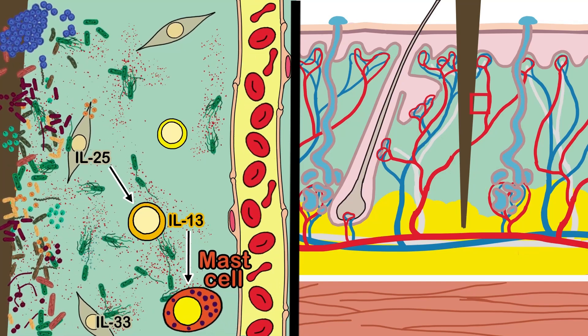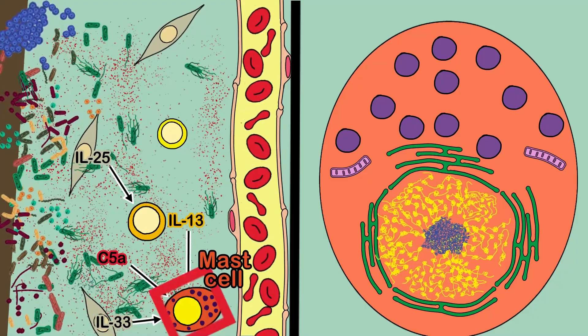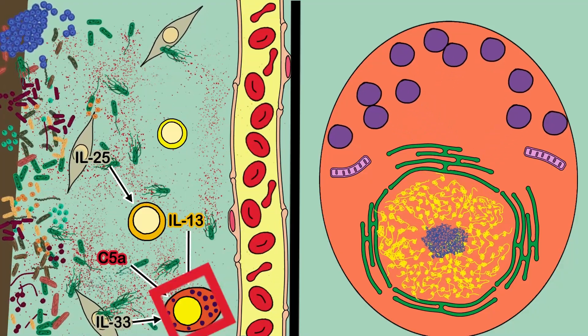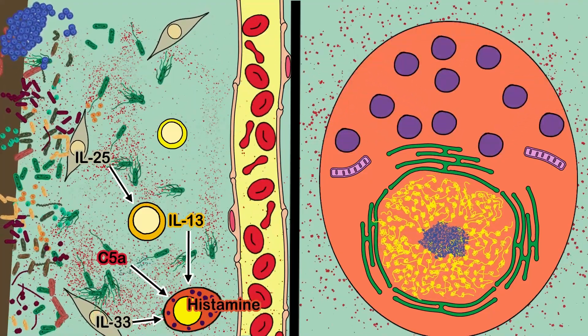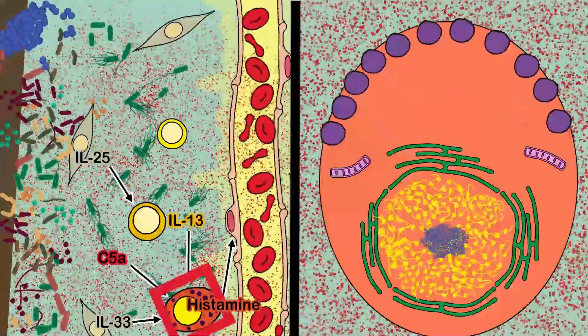Mast cells finally arrive at the injured site and are activated by components 5A and IL-33. Activated mast cells secrete large amounts of histamine which binds with receptors on endothelial cells stimulating an increase in blood flow.